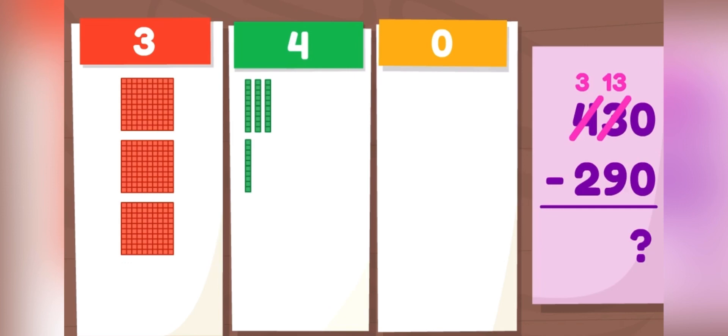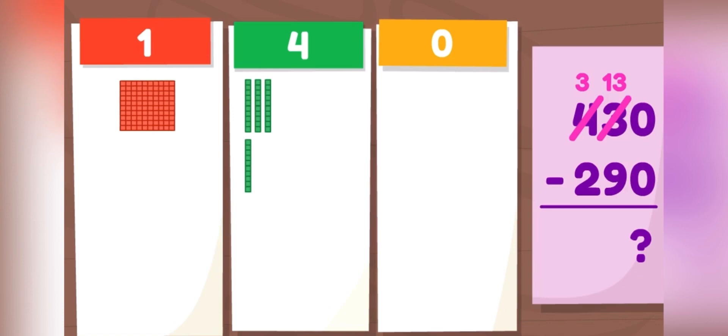Next, let's take away the hundreds. There are two hundreds in 290. How many blocks are left? We have 100 and one, two, three, four tens. That means that 430 minus 290 equals 140. Ta-da!